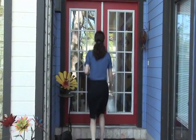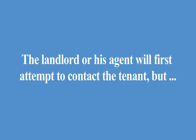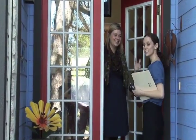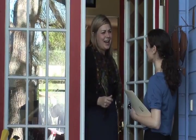Paragraph 14 authorizes the landlord or anyone authorized by the landlord to access the property. The landlord or his agent will first attempt to contact the tenant, but they are permitted to enter the property at reasonable times without notice to make repairs or to show the property. Additionally, the landlord or his agent may enter the property without giving notice in limited circumstances provided in the lease — be sure to read through those limited situations. If the landlord has made arrangements with the tenant to access the property, the tenant may incur a trip charge if they prevent such access. This paragraph also authorizes a key box to be placed on the property. Tenants may withdraw this authorization by providing written notice and paying a fee to the landlord.